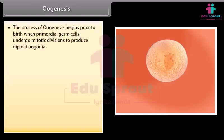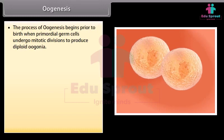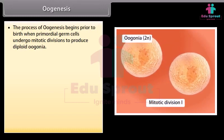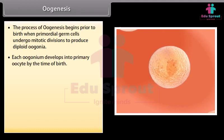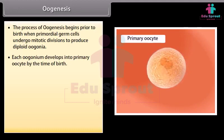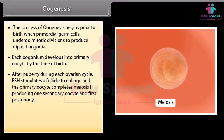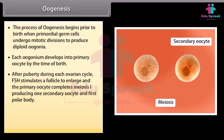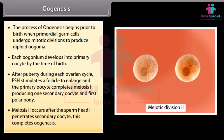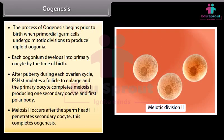Oogenesis begins prior to birth when primordial germ cells undergo mitotic divisions to produce diploid oogonia. Each oogonium develops into a primary oocyte by the time of birth. After puberty, during each ovarian cycle, FSH stimulates a follicle to enlarge and the primary oocyte completes meiosis I, producing one secondary oocyte and a first polar body. Meiosis II occurs after the sperm head penetrates the secondary oocyte, completing oogenesis.